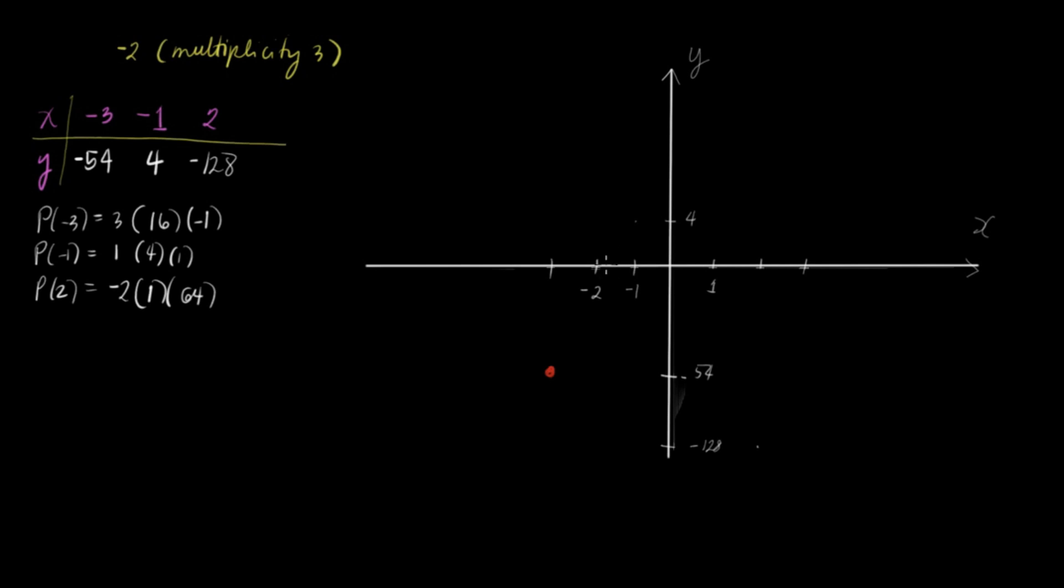Two at negative 128 and then negative one at 4. So let's have this at 4. So let's plot the points. We have a 0 at negative 2, 1 is 4, we have a 0 at 1, we have a 0 at 0, and then we have 2 at negative 128.